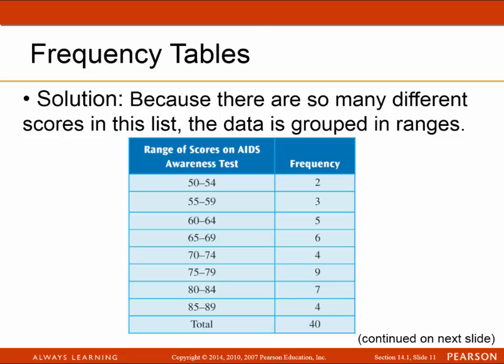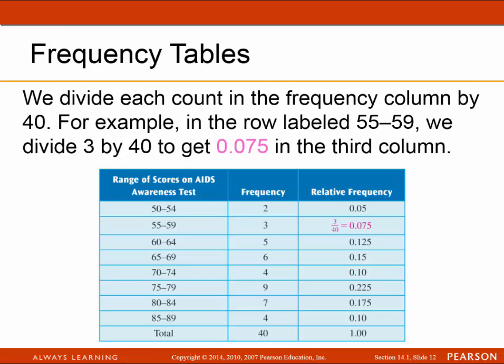One thing to notice is that the classes are consistent: 50 to 54 is the same width as 55 to 59, so the difference between the upper and lower limit is the same for each class. The frequencies must add up to 40. For the relative frequency, you take frequency divided by total; the third column should add up to 1.